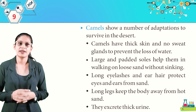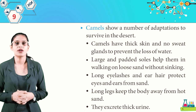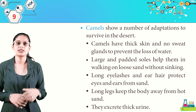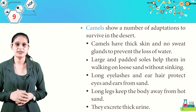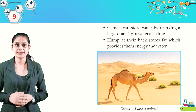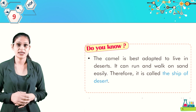Camels show many adaptations to survive in the desert: they have thick skin and no sweat glands to prevent water loss, large padded soles for walking on loose sand, long eyelashes and ear hair to protect eyes and ears from sand, and long legs to keep the body away from hot sand. They excrete thick urine, and can store water by drinking large quantities at a time. The hump stores fat which provides energy and water. The camel is therefore called the ship of the desert.